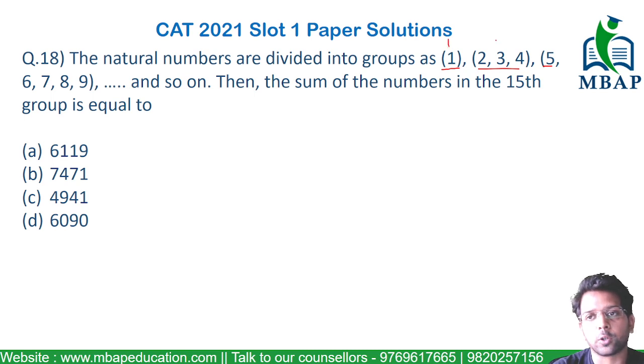If you look at the first term, it has got one term, the second group has got three terms, the third group will have five terms, the next will have seven terms, and likewise. So the number of terms per group is going ahead by 2, 2, 2, 2.